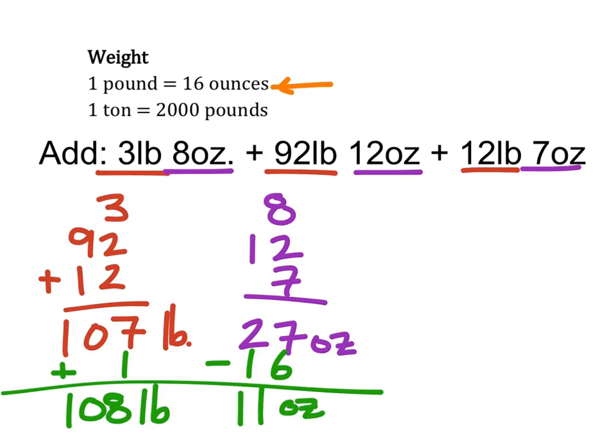Now if I had enough ounces to make another pound I would, however 11 is not enough. So this means that I have simplified this problem as far as I can go to be 108 pounds 11 ounces. Thanks for watching, I hope this was helpful, and we will see you guys in the next video.